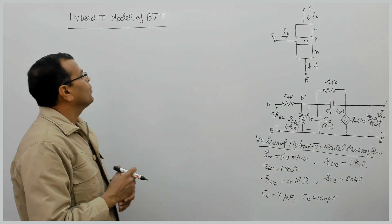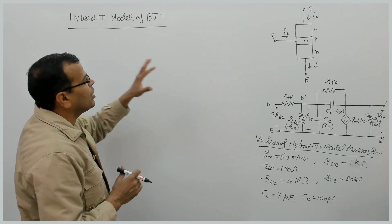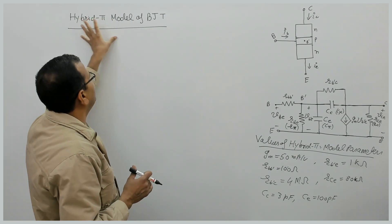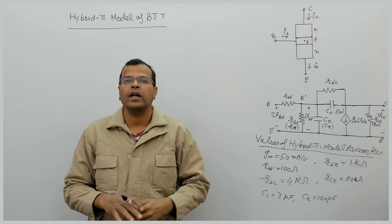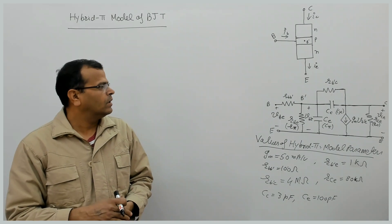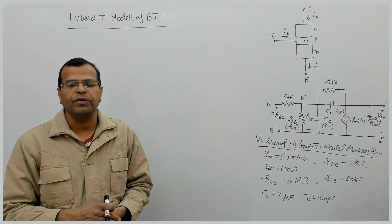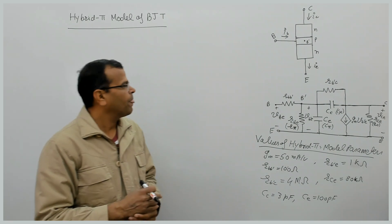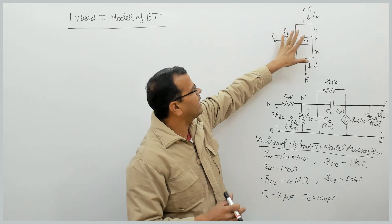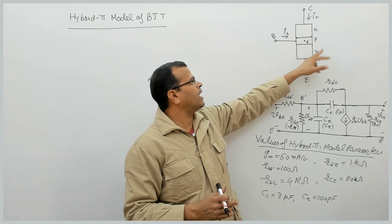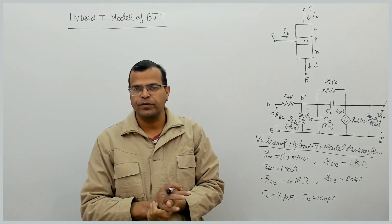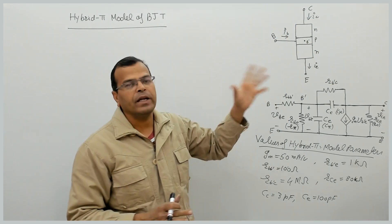In this case, we will be talking about the hybrid pi model, which will be used for analysis at high frequencies — that is, analysis of BJT at high frequencies. I have drawn a simple layer diagram of BJT which is NPN type, showing the base terminal, collector, and emitter terminal.